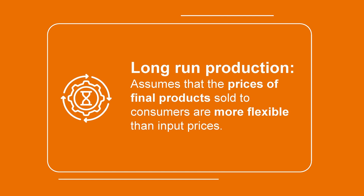Productivity is related to what we call long-run production. How can we define long-run production? The first thing that we have to keep in mind is price flexibility. Price flexibility is not the same for all goods and services. That is why in macroeconomics we use an assumption in order to simplify and establish the difference between the short run and the long run. This assumption consists on the fact that the prices of final products sold to consumers are more flexible than input prices. In other words, the cost of each factor of production used to produce a final good or service is more inflexible in the short term than the price of the final good itself.